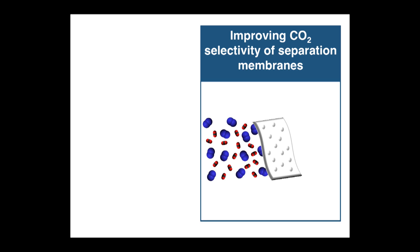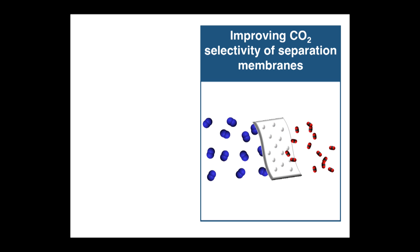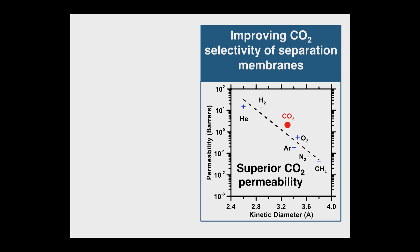Our team member Cheng Wei Lin, advised by Dr. Rick Kainer, is investigating how to improve CO2 selectivity of these separation membranes. These membranes act as molecular sieves by separating CO2, allowing it to pass, while preventing larger oxygen and nitrogen molecules from passing through. By tuning the chemical composition of these membranes, we can achieve superior CO2 permeability and improved CO2 selectivity, which is the ratio between permeability of CO2 and other gas species.